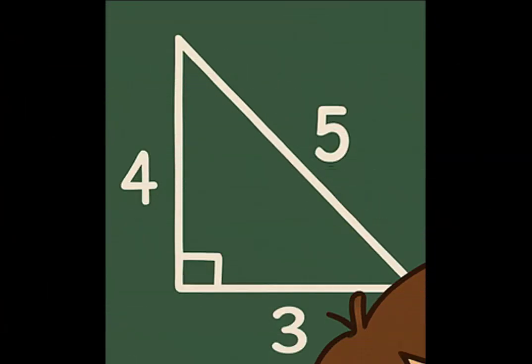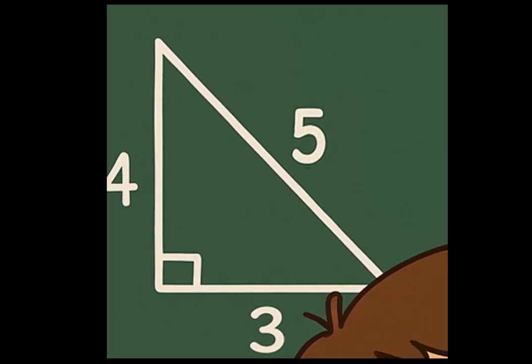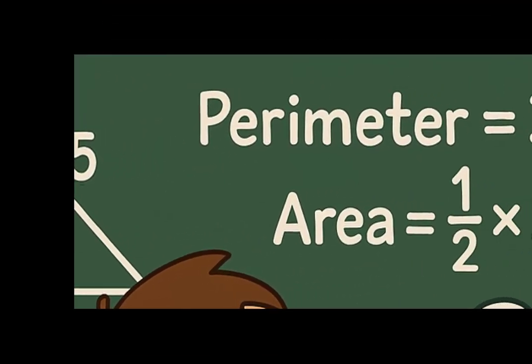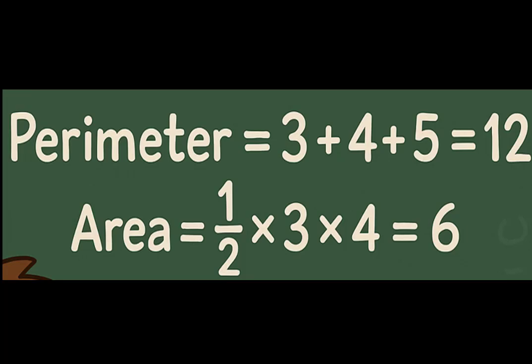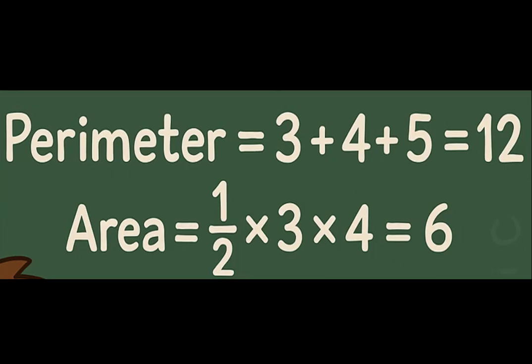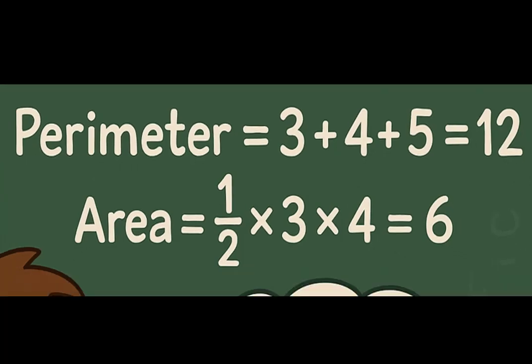Let's test some well-known right triangles. 3, 4, 5. Perimeter is 3 plus 4 plus 5, which is 12. Area is 1 half times 3 times 4, which gives 6. Not equal.